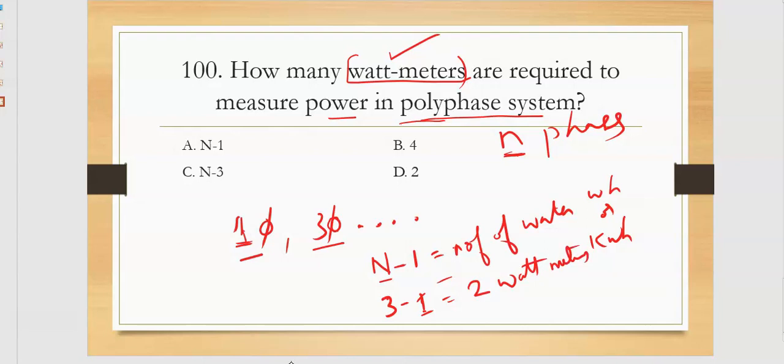You have a 3-phase line R, Y, B. You connect one watt meter P1, another watt meter P2. So the right answer is N minus 1. Thank you guys for watching. Like, subscribe, and share the videos. Comment in the comment box if you have any questions or subjects you want me to cover. I will try to make the best content for you guys for the examination purpose. Wish you all the best for all types of exams.